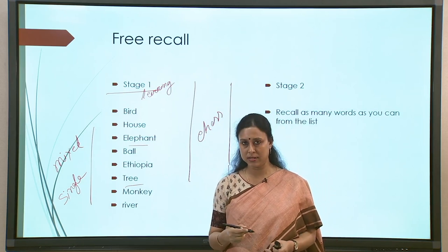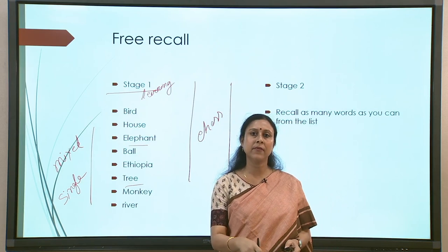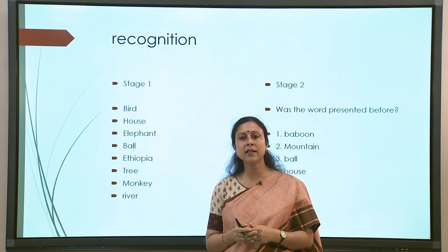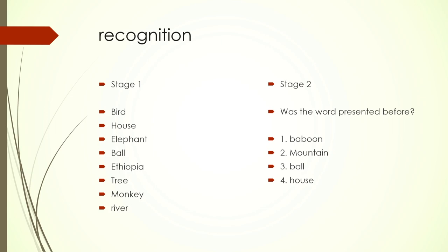Depending on the research question, we can make various changes in the initial learning stage. Another kind of memory measure is recognition. Recognition is similar — again we have a list of words and there could be a break of some time, say 10–15 minutes, and then there is stage 2 where there is a slight difference from free recall.